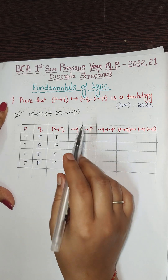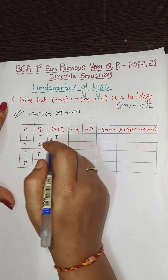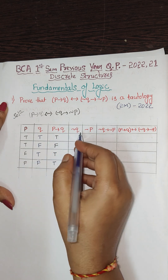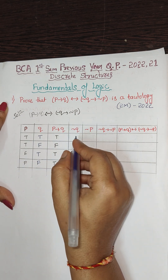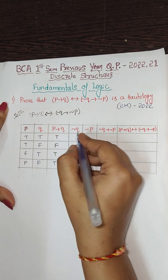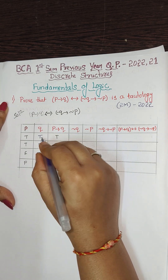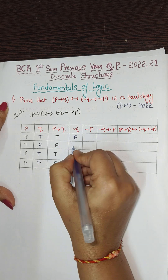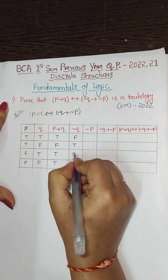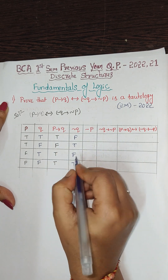Next is negation of q. Negation of q means we reverse the truth value. So where q is T we write F, and where q is F we write T. The negation of q column becomes: F, T, F, T.